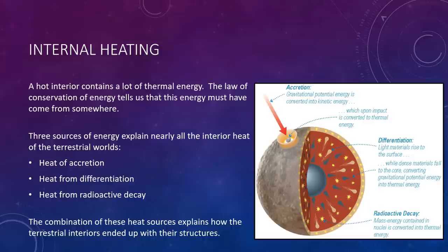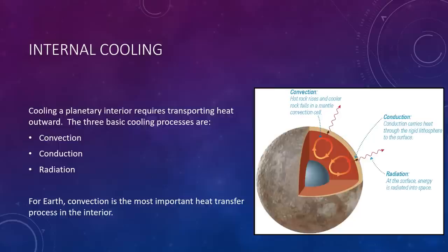The combination of the three heat sources explains how the terrestrial interiors ended up with the core-mantle-crust structures. The many violent impacts that occurred during the later stages of accretion deposited so much energy that the outer layers of the young planets began to melt. This started the process of differentiation, which then released its own additional heat. This heat, along with the substantial heat from early radioactive decay, made the interiors hot enough to melt and differentiate throughout.